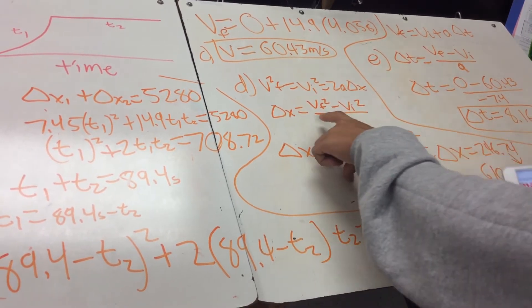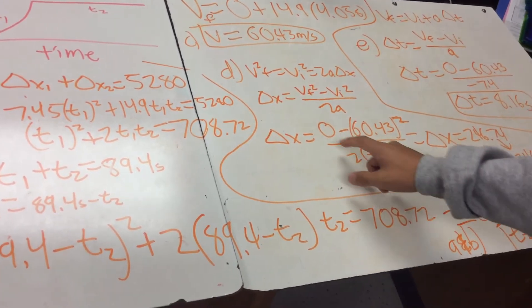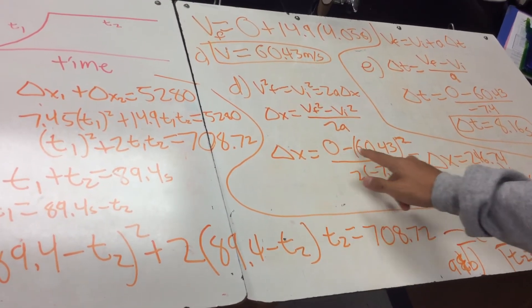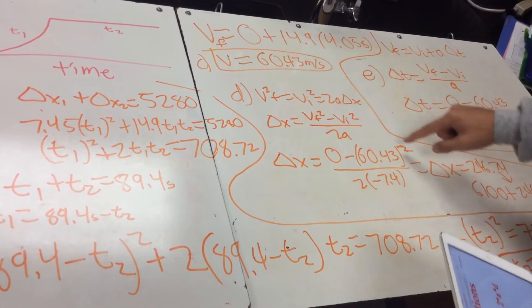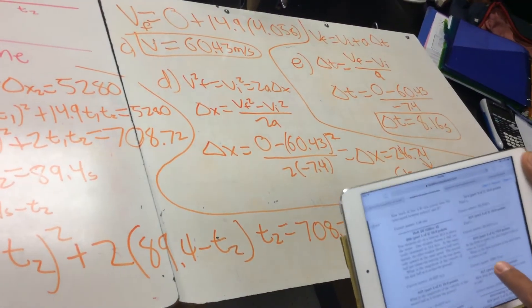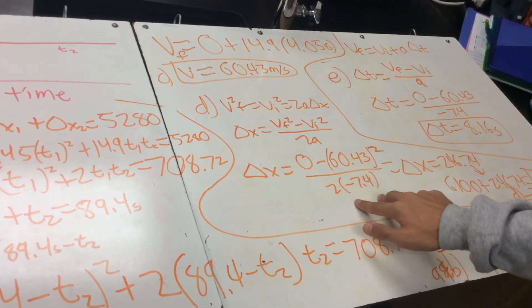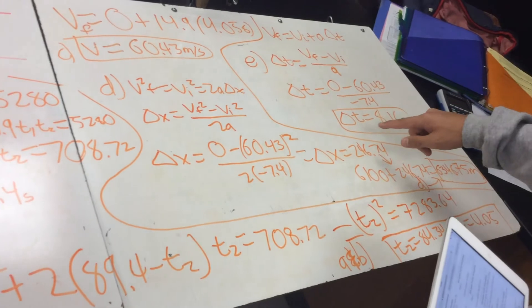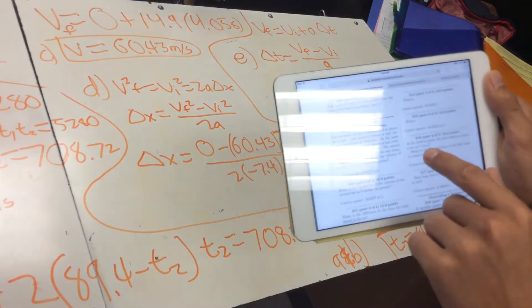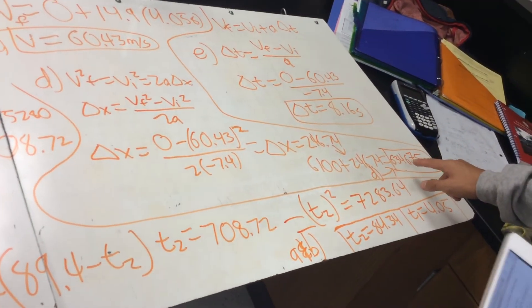And then you'll get velocity final squared minus velocity initial squared over 2 times the acceleration. And then the problem, it says the acceleration is 7.4, and since it's decelerating, that would be a negative acceleration, so it's 2 times negative 7.4. And when you do that, you will get the change in displacement as 246.74, and it says at a 6,100 meter mark, it begins to decelerate. So you'll add the displacement plus 6,100, and you'll get 6,346.75 meters.